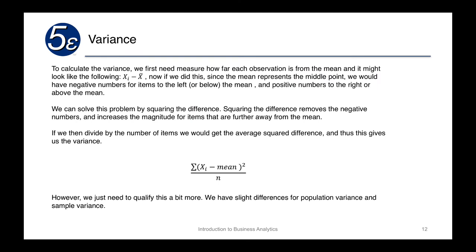To calculate the variance, we measure how far each observation is away from its mean. For each individual x, we subtract the mean from it. Points way above the mean will be positive, and points below the mean will be negative. The problem is we want to know how far away something is — distances are always positive numbers — so we need to get rid of those negative numbers.